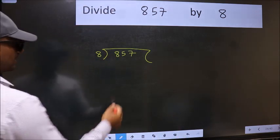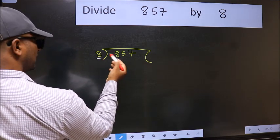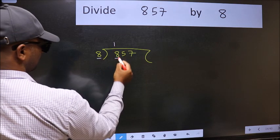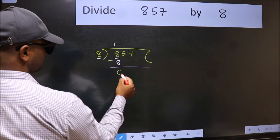Next. Here we have 8 and here 8. When do we get 8 in the 8 table? 8 times 1 is 8. Now we should subtract. We get 0.